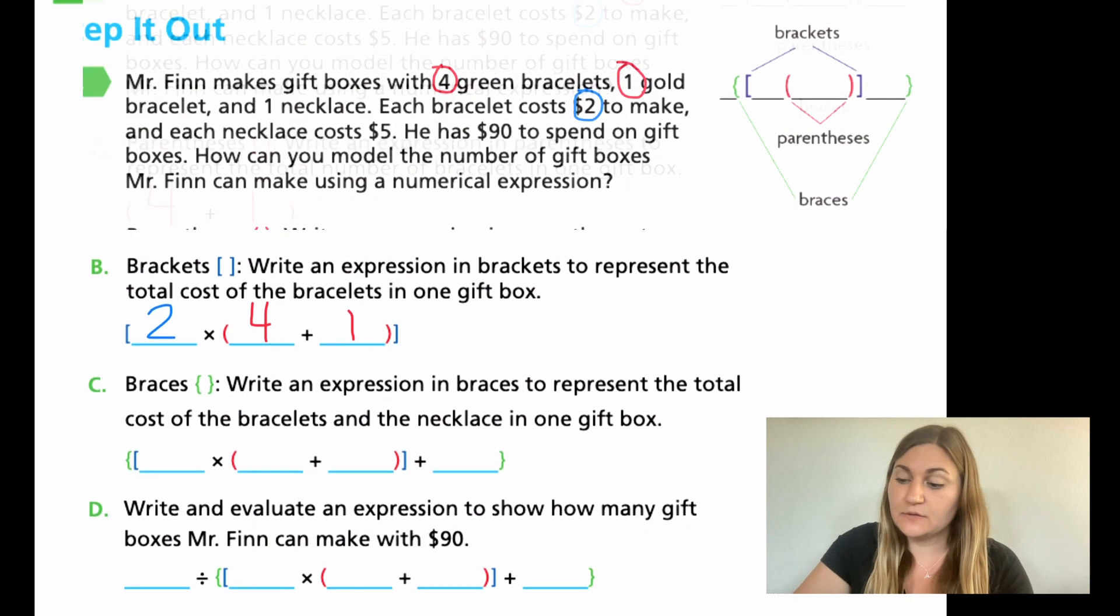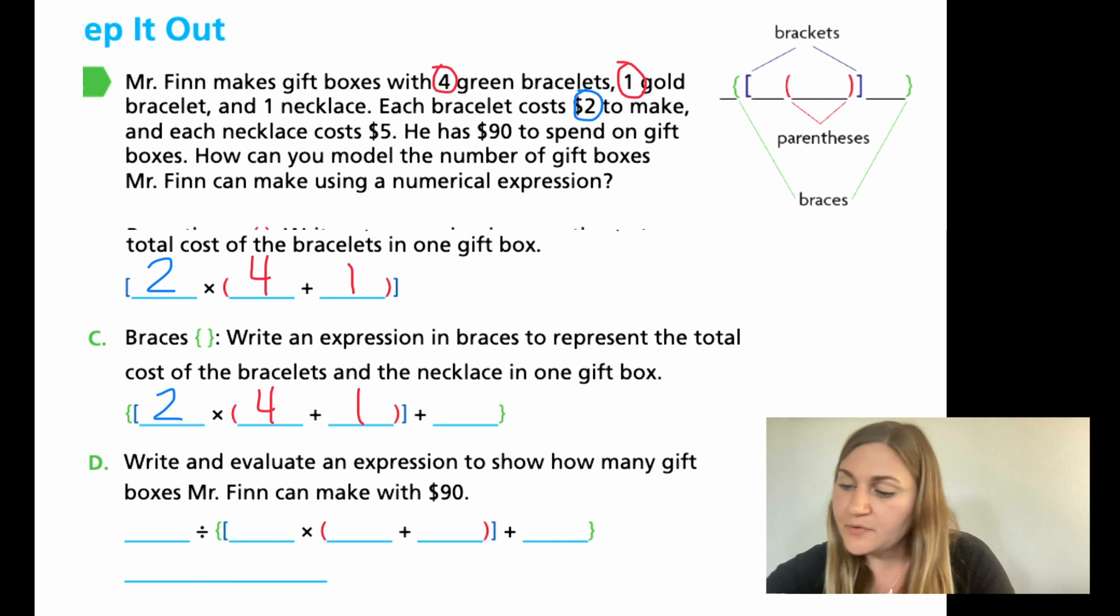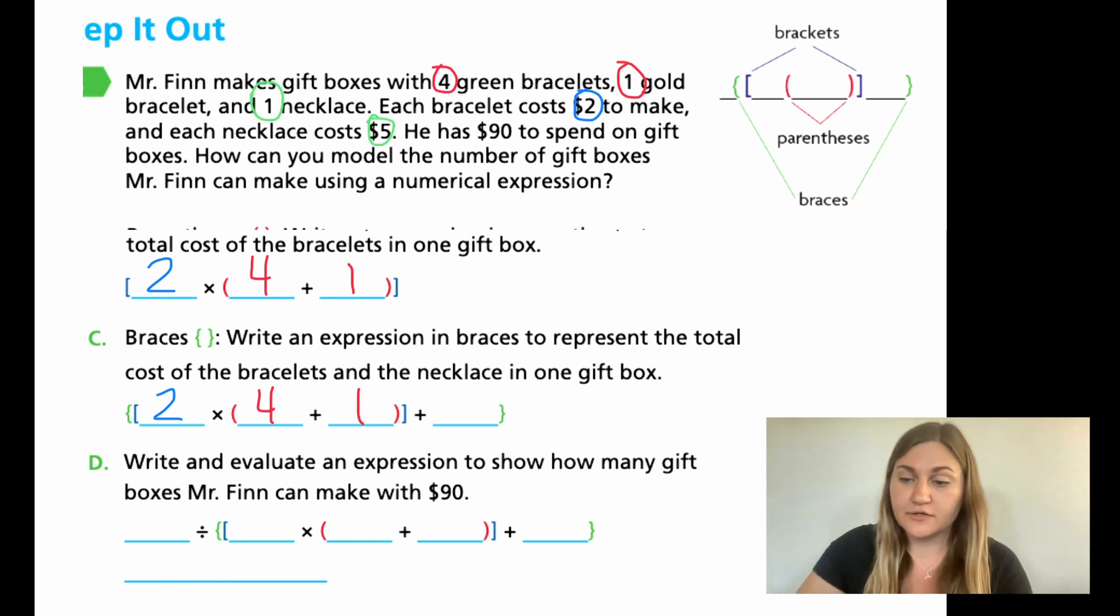Now C moving down to braces, which is in green. Write an expression in braces to represent the total cost of the bracelets and the necklace in one gift box. I'm going to copy what I have down here so far. So I have my $2 for my four and my one bracelet. Now it's looking for green for the necklace. Remember there was only one necklace and that necklace costs $5. So what I'm going to do here is I'm going to show that since I'm talking about cost and there's only one of them, I'm going to show it as 5 in my problem.